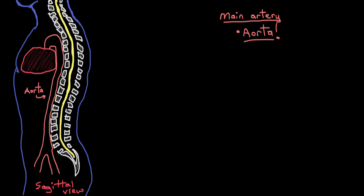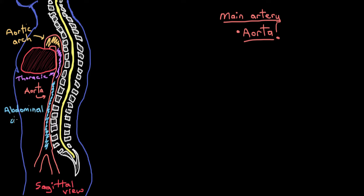We actually divide up the aorta into different regions. This region up here we call the aortic arch, and then this region here in the chest area is called the thoracic aorta — thoracic referring to the thorax, or the trunk. And then we have this big section down here that starts underneath the diaphragm, called the abdominal aorta.